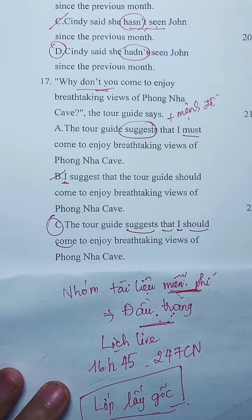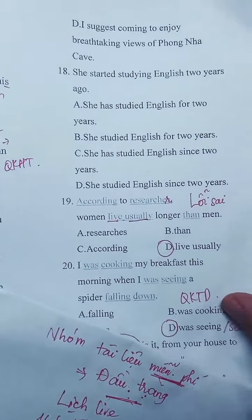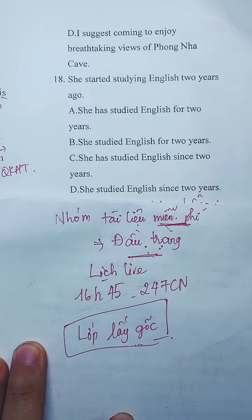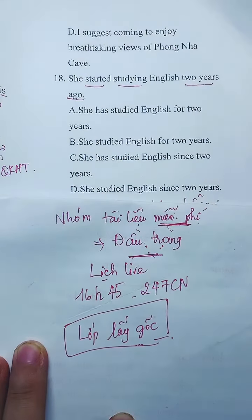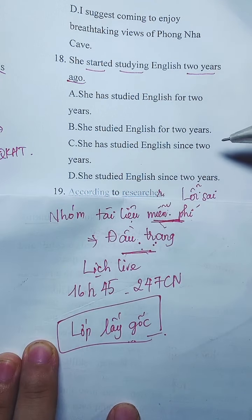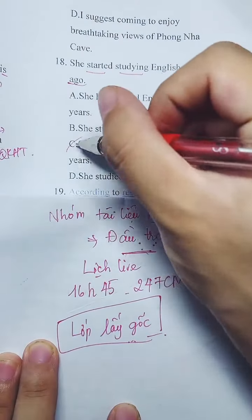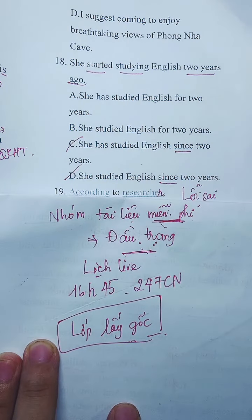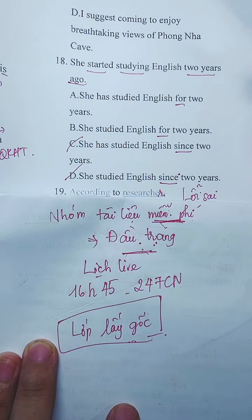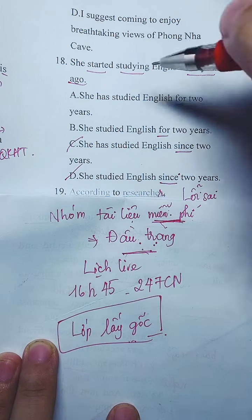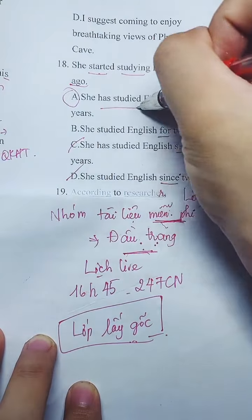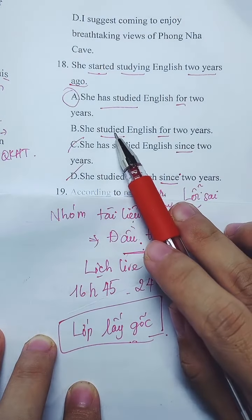Câu 18 giống câu trước: cô ta bắt đầu học tiếng Anh 2 năm trước, có nghĩa là đã học được 2 năm rồi. Loại đáp án dùng 'since' với '2 years' vì '2 years' là khoảng thời gian phải dùng 'for'. Loại thêm cái dùng 'since'. Còn lại 2 cái - cái nào chia ở hiện tại hoàn thành thì đúng. Đáp án A. Không chia quá khứ vì như vậy có nghĩa là đã kết thúc hoàn toàn trong quá khứ rồi.